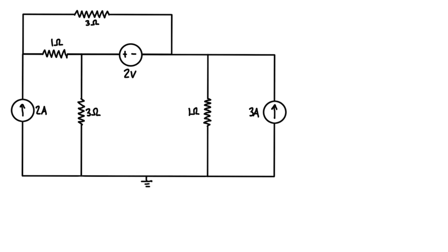That means this bottom node is zero volts. Up here we'll call this node A, this one node B, and this one node C. So we have three unknown nodes and we'll need three equations. The first equation comes from KCL at node A, then we'll identify our supernode, do KCL at the supernode, and write the supernode equation.